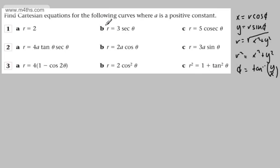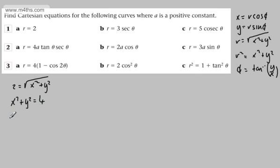We're asked to find the Cartesian equation for the following curves where a is a positive constant. For r equals 2: since r equals the square root of x squared plus y squared, we get 2 equals the square root of x squared plus y squared. Squaring both sides, x squared plus y squared equals 4. This is a circle, centre (0,0), radius 2. In general, r equals a gives a circle with radius a units.